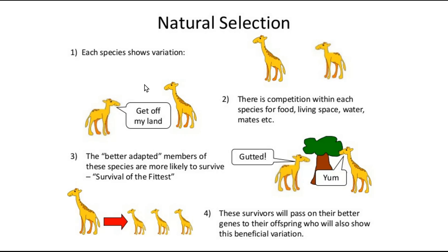Here we can see an example using giraffes. We have two giraffes showing variation — one with a short neck and one with a long neck. There's competition within the species for food, and the better-adapted members are more likely to survive because they're fitter. Fitter simply means being able to reach reproductive age and pass their traits on. These survivors pass on their better genes, so offspring are born with longer necks, and eventually the shorter-necked giraffes die off.